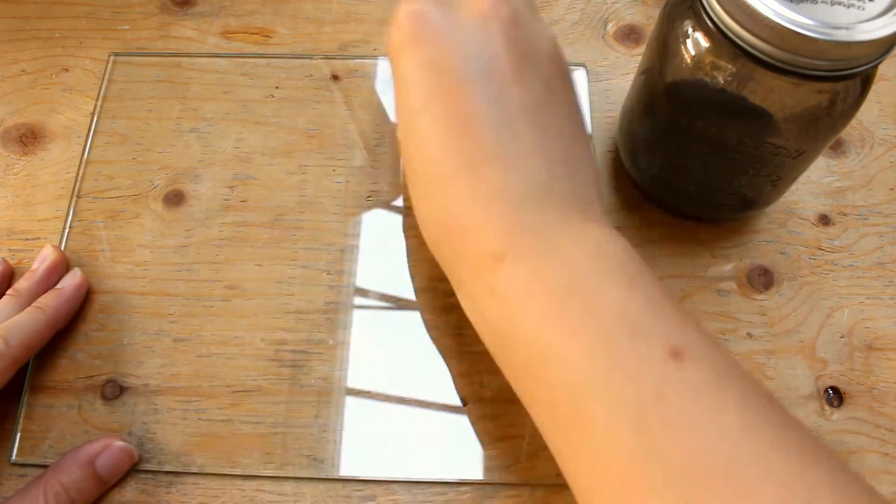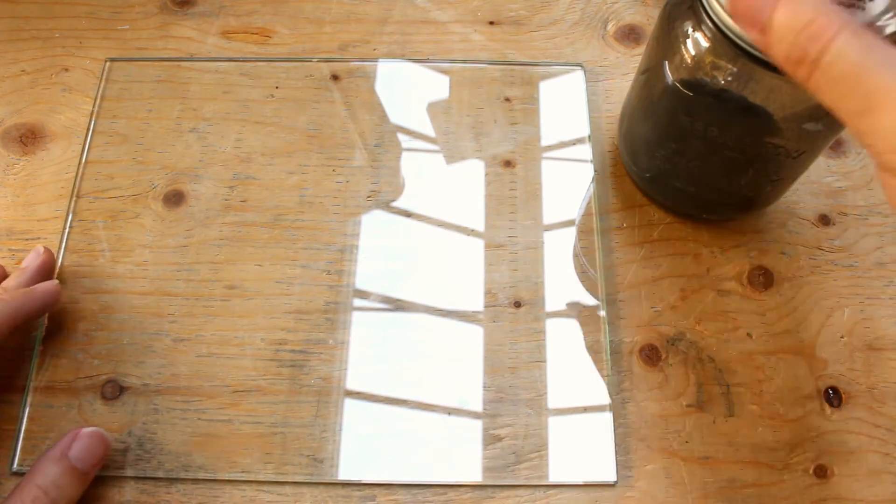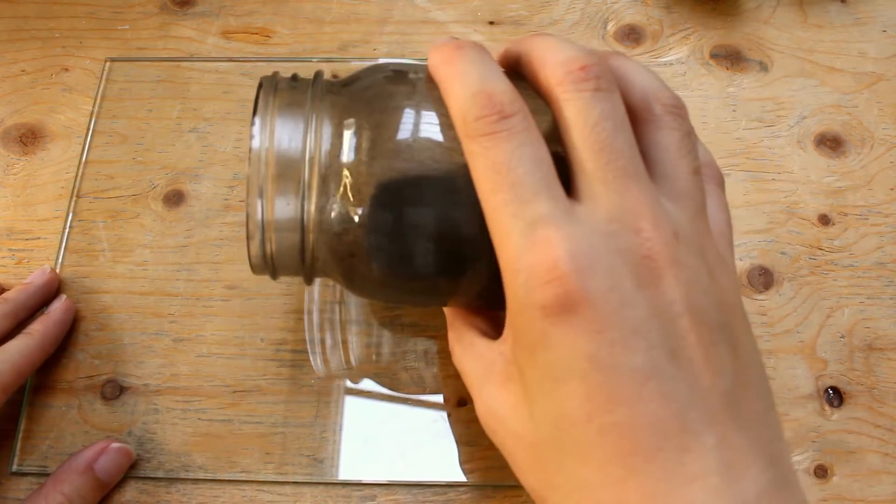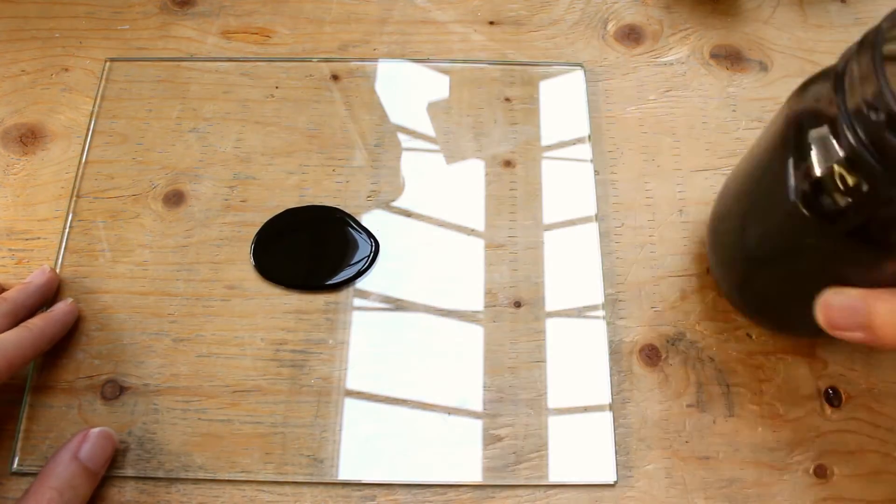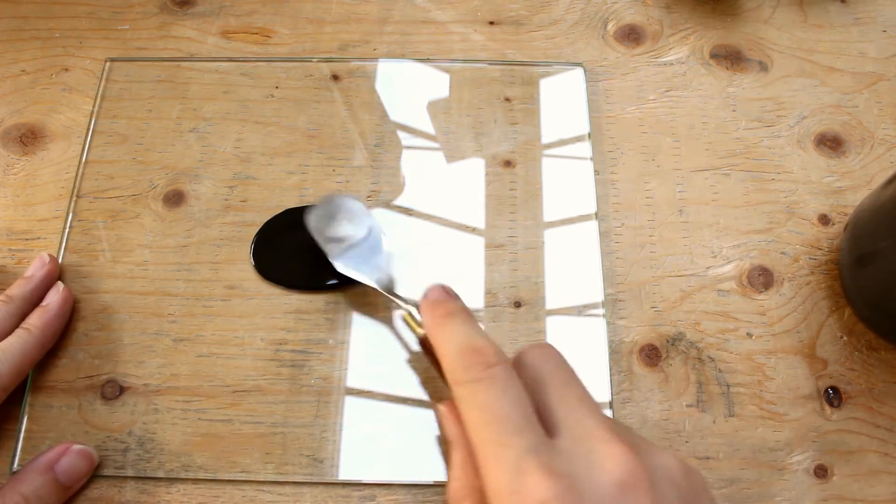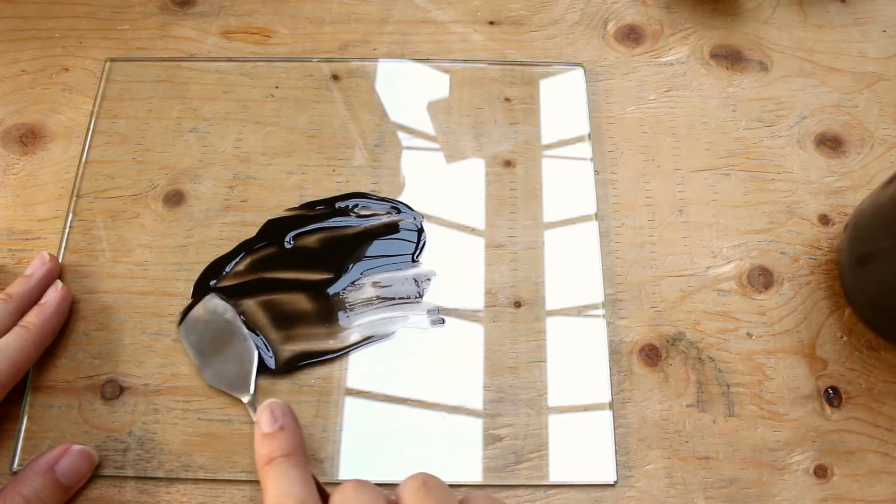We want to start with a clean surface so we will wipe down our glass bed with some alcohol. Now open up the ABS sludge and pour some out onto the glass bed. Gosh, it smells horrible. Spread the sludge evenly across the surface you are printing on.